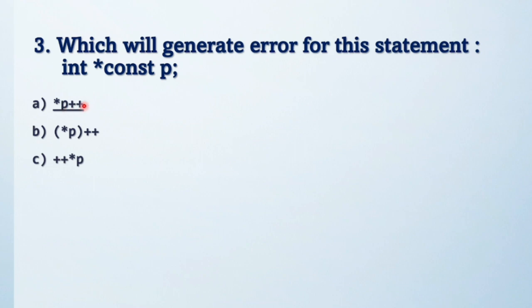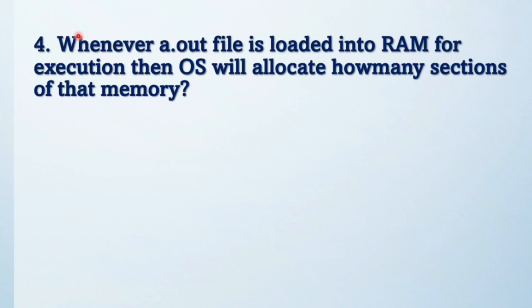Next question: whenever a.out file is loaded into RAM for execution, then OS will allocate how many sections of that memory? Understand the question. Read it again friends and see the options.